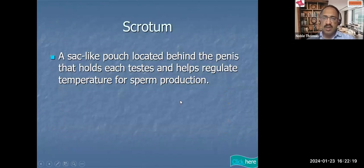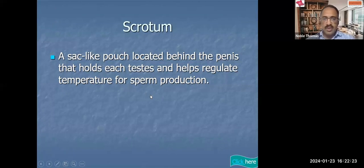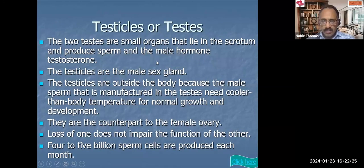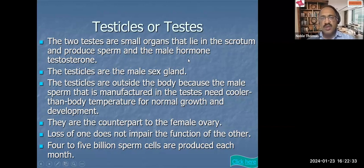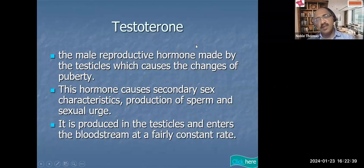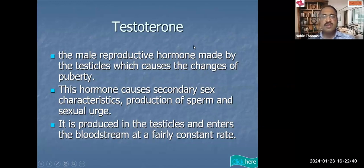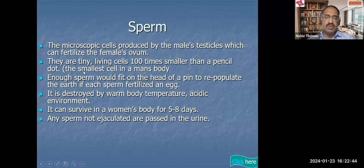The scrotum is a bag-like structure situated outside the body in which the testes are located. Testes are the male reproductive organs where sperms are produced and testosterone is produced. Testosterone is responsible for the secondary sexual characters.